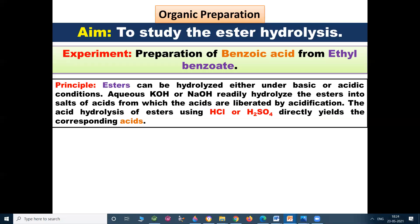Principle of the experiment: esters can be hydrolyzed either under basic or acidic conditions. Aqueous KOH (potassium hydroxide) or aqueous NaOH (sodium hydroxide) readily hydrolyzes the ester into salt of acid from which the acid is liberated by acidification.